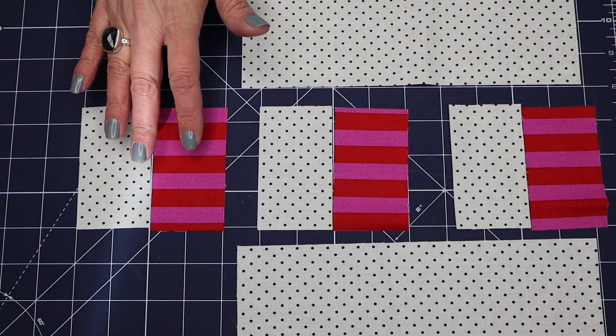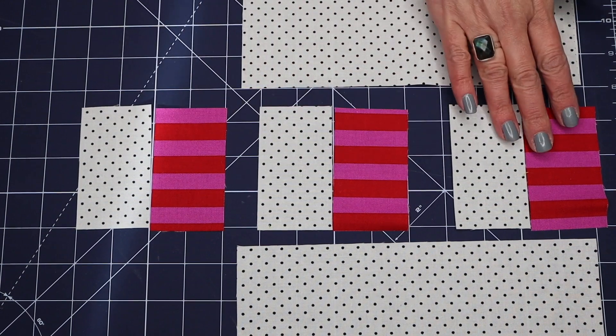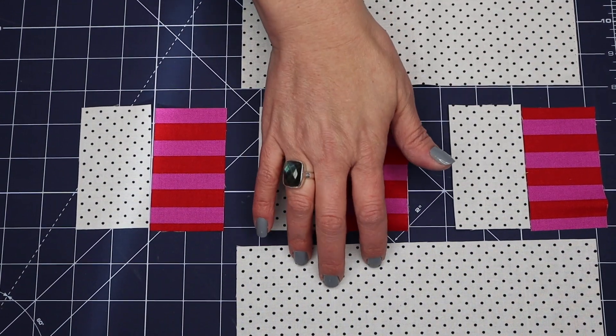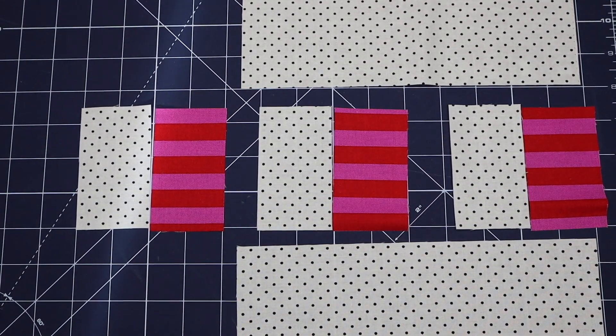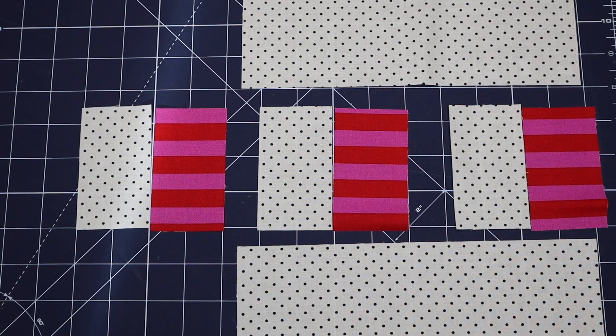All my pieces are cut. Let's get started. The crosswalk block, you can see I have three sets of rectangles and then the larger two rectangles for the top and bottom as prescribed in the pattern.